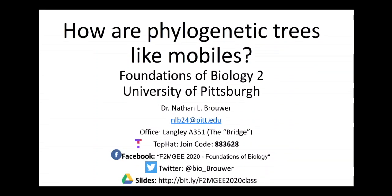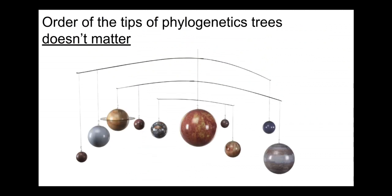In this movie I want to talk about how phylogenetic trees are like mobiles, the mobiles that are in a kid's room or hanging above a baby's crib. This is a good analogy for a couple key features of phylogenetic trees. That feature is the order of the tips doesn't matter on a phylogenetic tree.